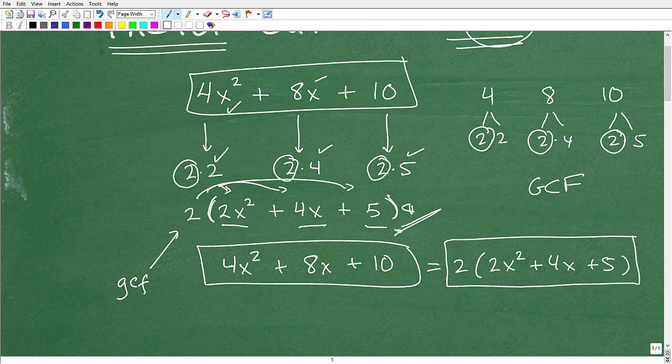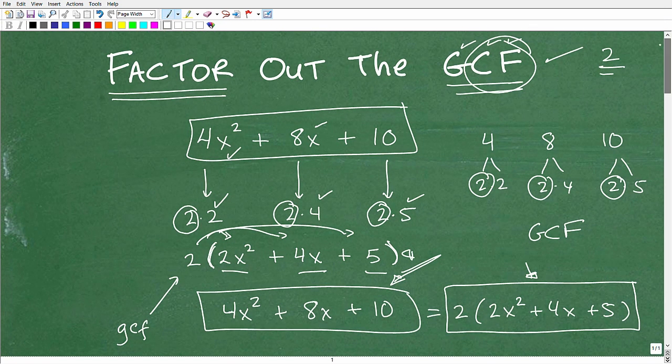This is a main point. In algebra, in mathematics, we always are going to want to factor expressions. So we have an expression like this, we want to factor it out and simplify it. One of the primary ways, the number one thing we're going to be looking to do right off the bat is to factor out those greatest common factors.